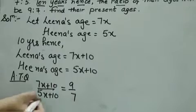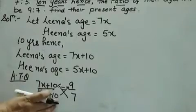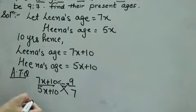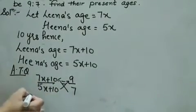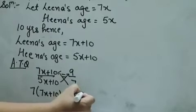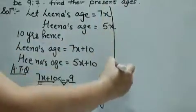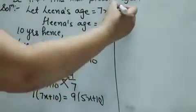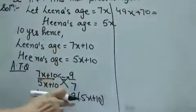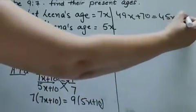Let's solve this. In such equations, when X is in the denominator, we cross multiply to reduce it to standard AX plus B form. After cross multiplying, we have 7 into (7X plus 10) equal to 9 into (5X plus 10). Expanding the brackets: 49X plus 70 equals 45X plus 90.